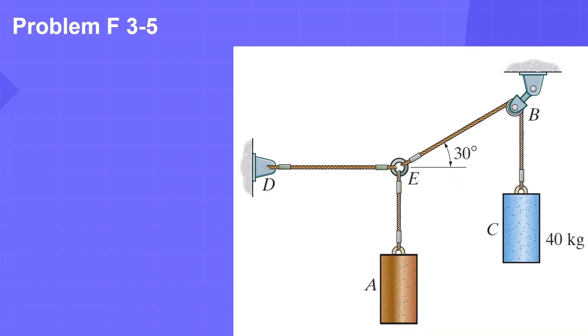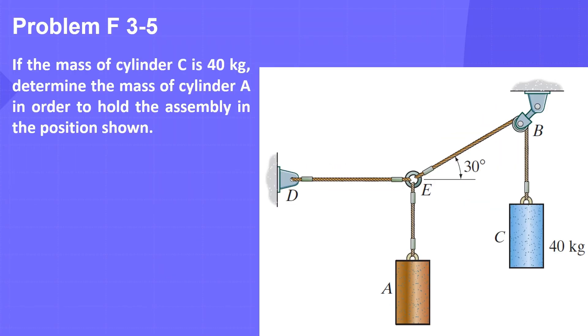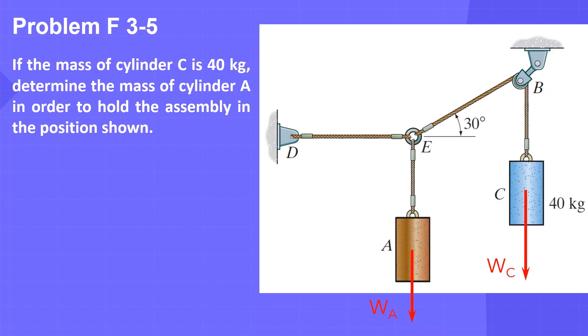Problem F3-5: If the mass of cylinder C is 40 kg, determine the mass of cylinder A in order to hold the assembly in the position shown.